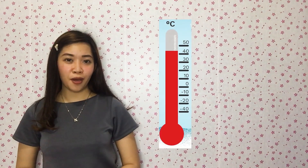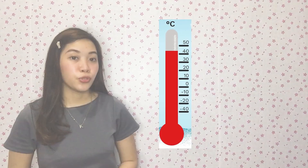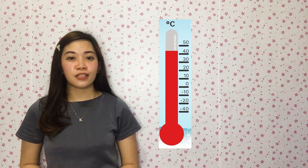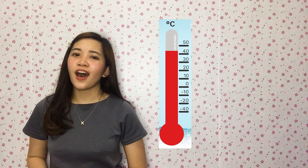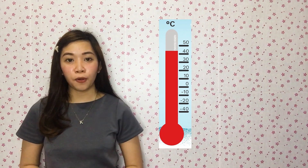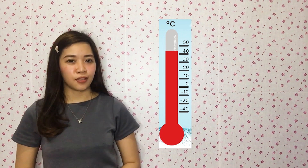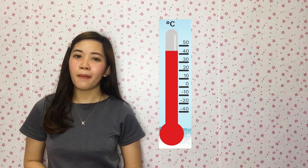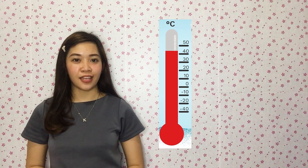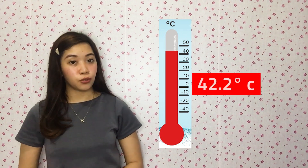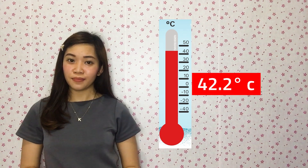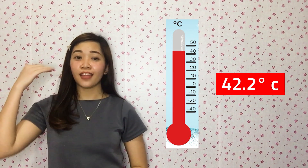One good example of a vertical number line is a thermometer. Look at this red-colored room temperature thermometer beside me. Do you know that based on Pag-Asa's historical data, the highest temperature ever recorded in the Philippines was in Tugigaraw, Cagayan on May 11, 1969 at 42.2 degrees Celsius?